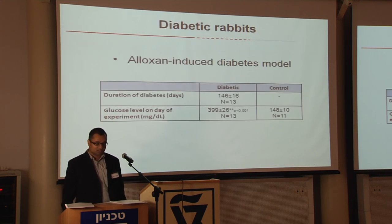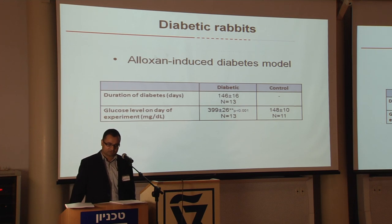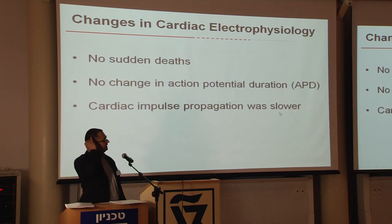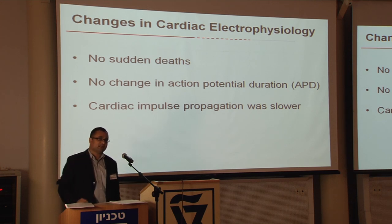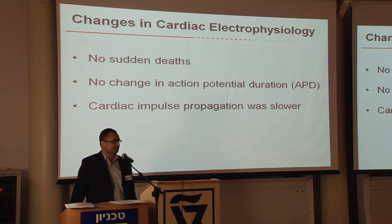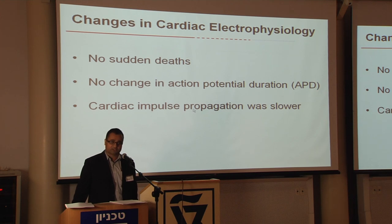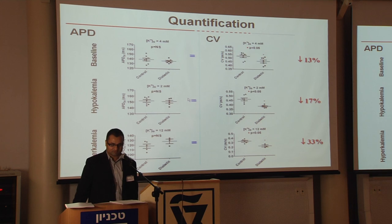We used a model of diabetic rabbits induced by alloxan, kept diabetic for about 150 days or about five months. The level of glucose on the day of experiment in diabetic rabbits was much higher compared to controls. To summarize quickly: we did not find any rabbits dying suddenly, in contrast to the Montreal group who reported cardiac deaths. What we did see was no change in action potential duration in diabetic rabbits, but the cardiac impulse propagation was slower.